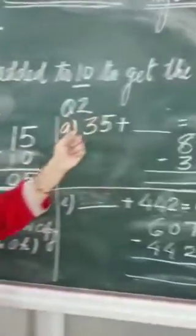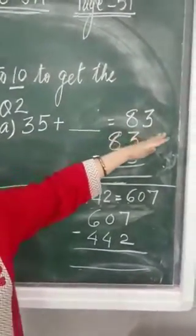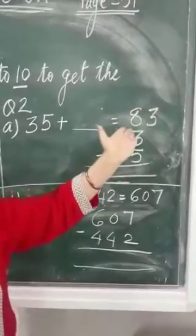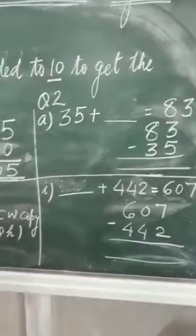Question number 2, part A. Which number is to be added to 35 to get the answer 83? So, how can we find out? Can we count on fingers? No. We need to subtract.